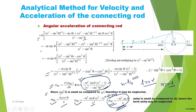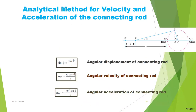To summarize, these three formulas are to be remembered for the connecting rod: the angular displacement, the angular velocity, and the angular acceleration. Up to this point we have found the acceleration of the piston and the acceleration of the connecting rod. In the next lecture we are going to discuss the dynamic force analysis of the reciprocating engine. Thank you.